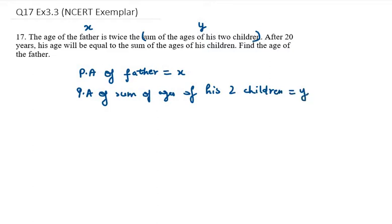After this line it says after 20 years. So after 20 years, father's age will be x plus 20 and sum of the ages of his two children.